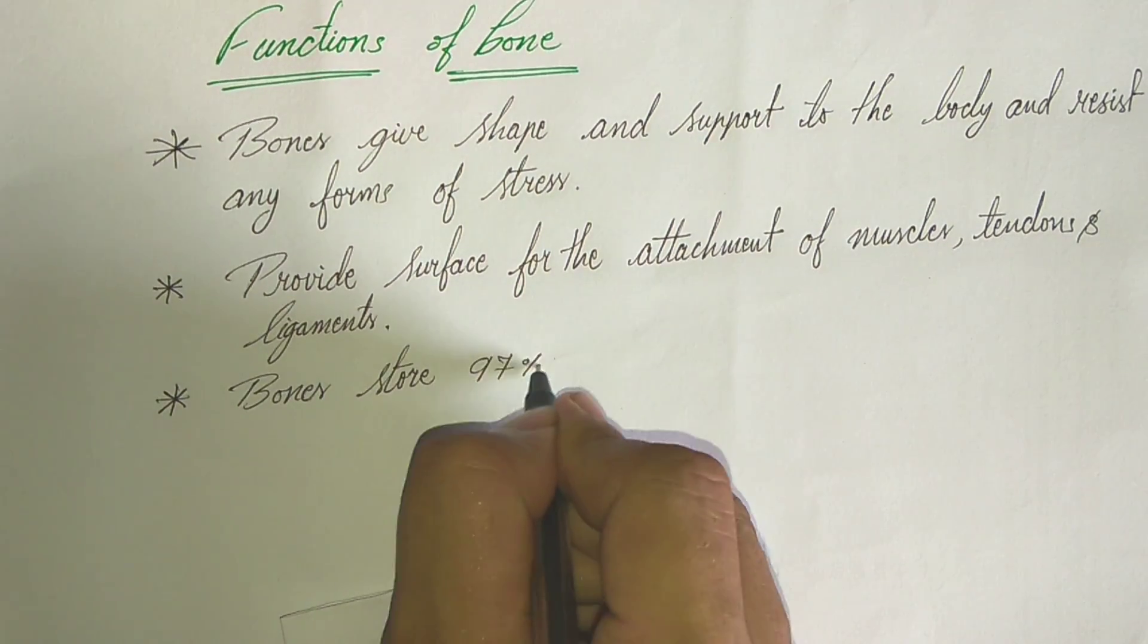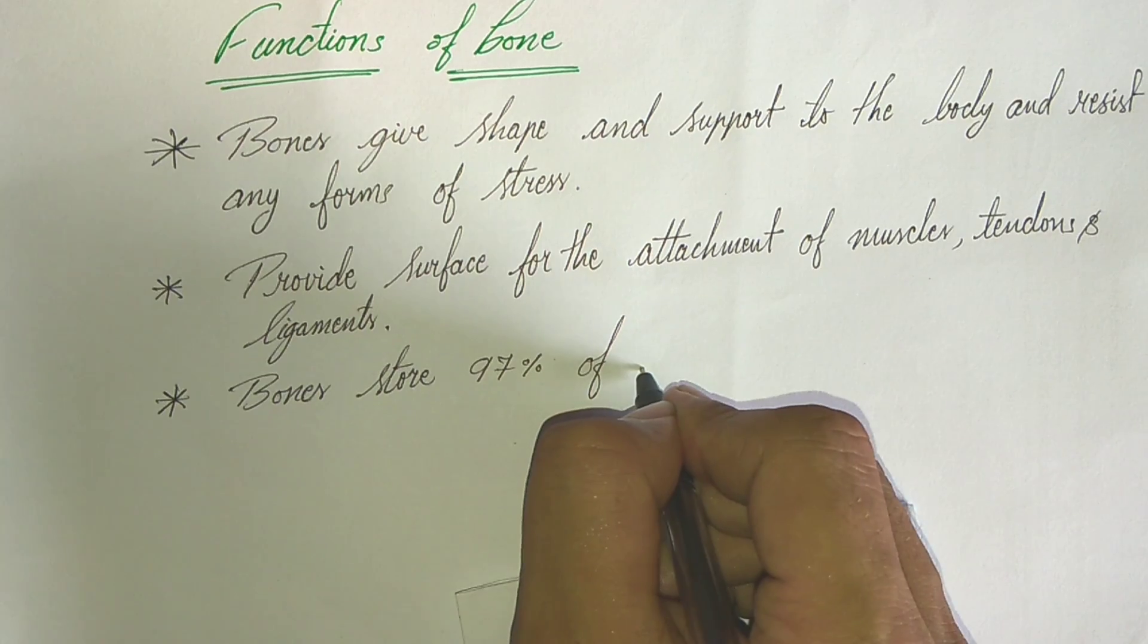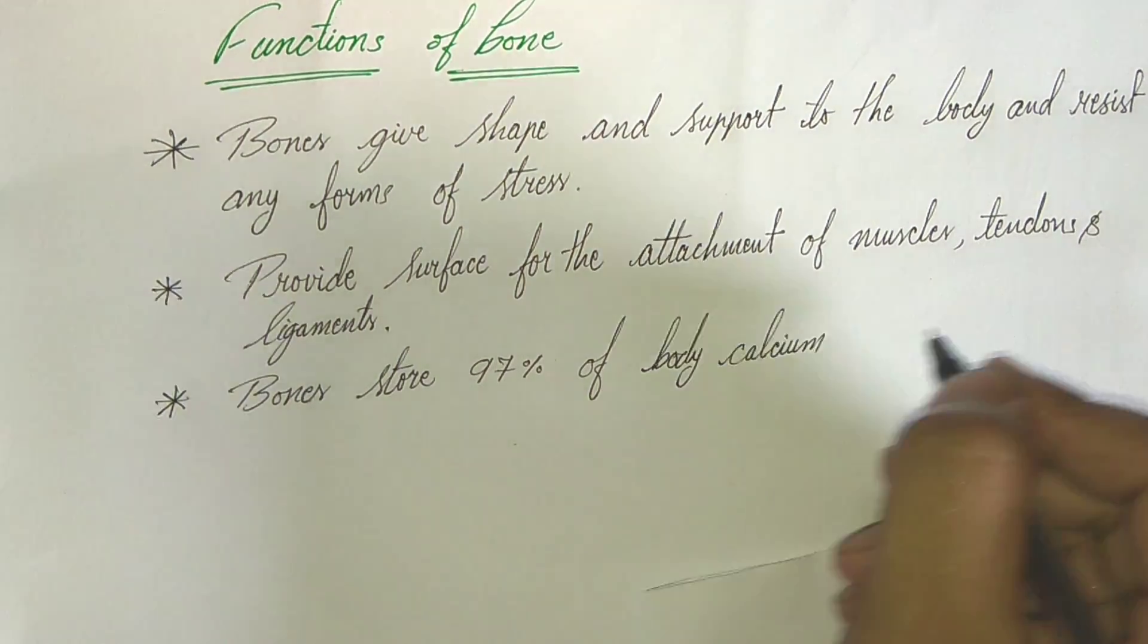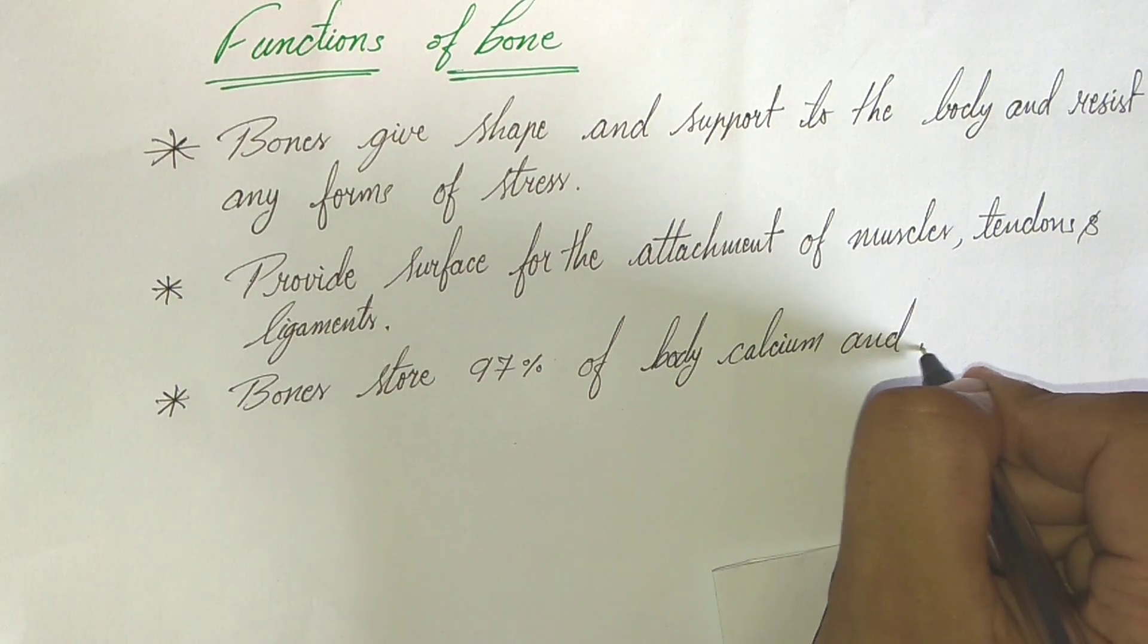Bone is stored 97% of body calcium and phosphorus as we all know.